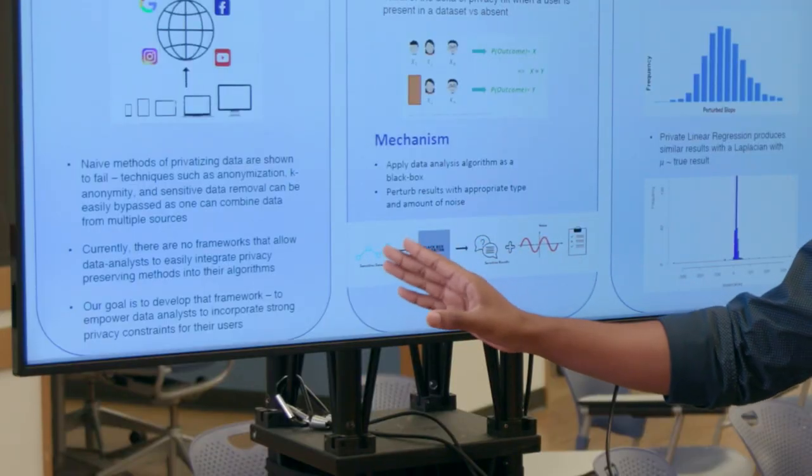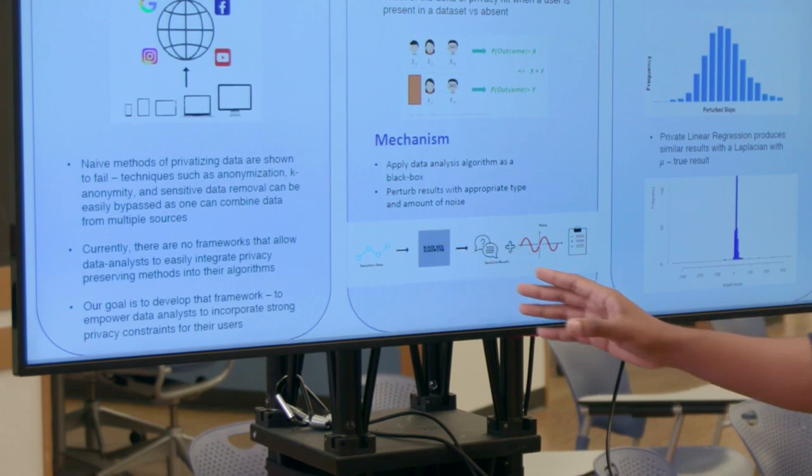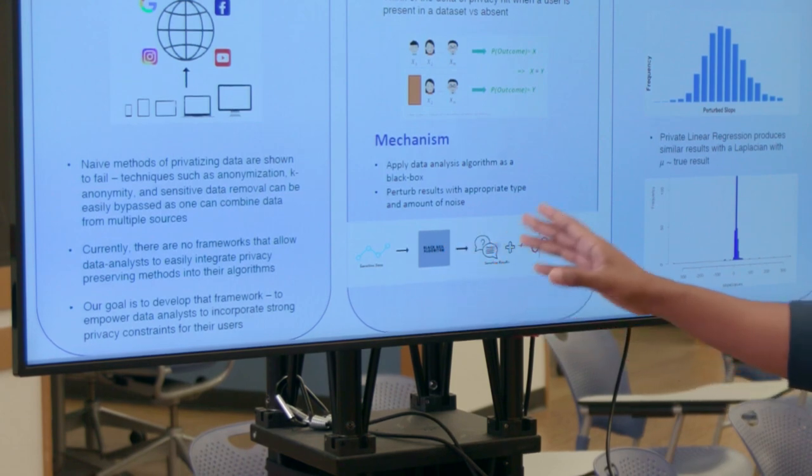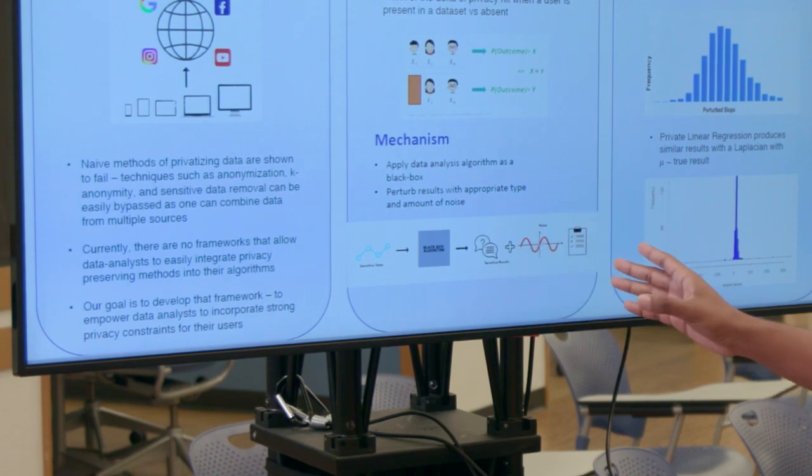What happens is that you start with the sensitive data, run the black box algorithm which is written by the analyst, get the result, and then we add the sensitive noise to the data and get the private result.